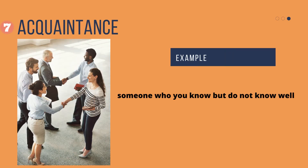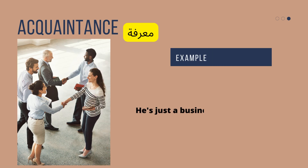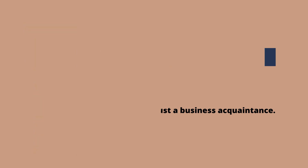Number seven: acquaintance. We use it always with 'get acquainted with.' It's someone who you know, but you don't know well — like you met them once or twice. Example: he's just a business acquaintance, not a friend. He's just one of my acquaintances.